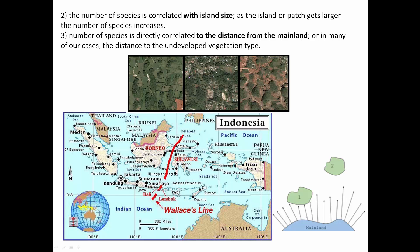The number of species is correlated with island size and also with distance from the mainland. This island is closer to the mainland and is going to have more species because of that proximity. Wallace's line is interesting — Australian species move about this far through the islands and Asian species down the Malaysian peninsula move about this far, giving you primarily Asian species on one side and Australian species on the other. Island size makes a big difference too — a larger island will have more species unless it's too far away.